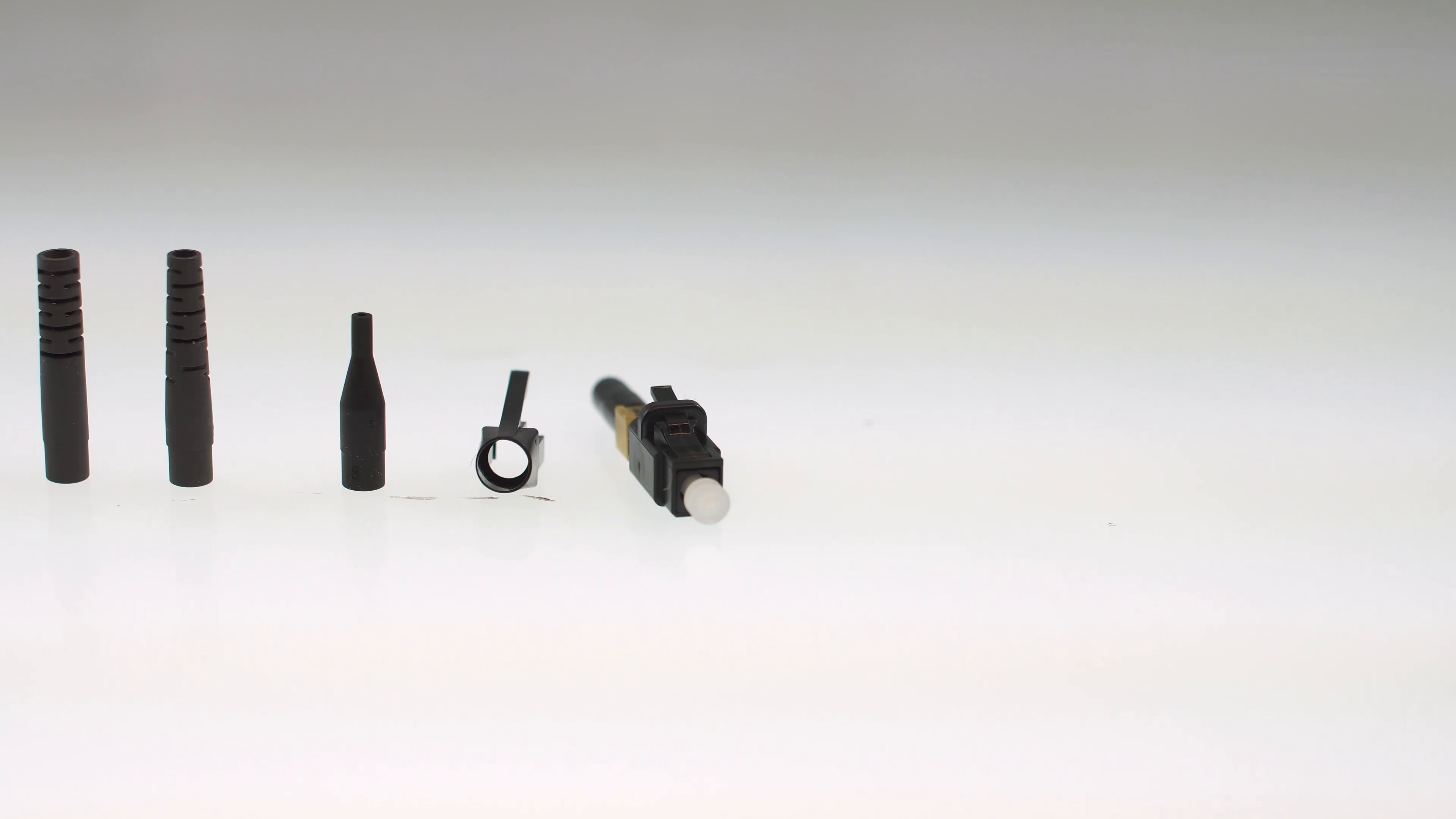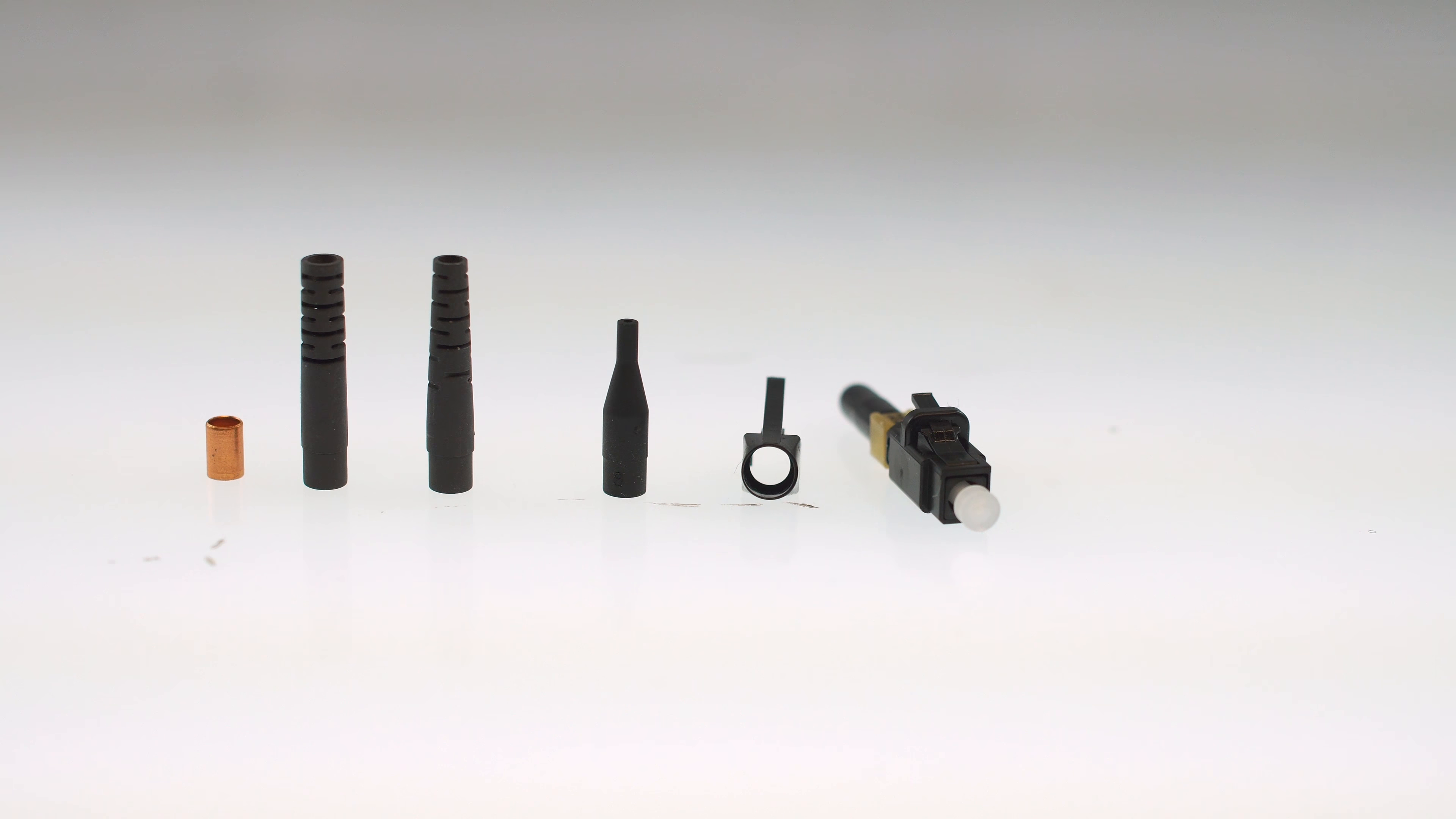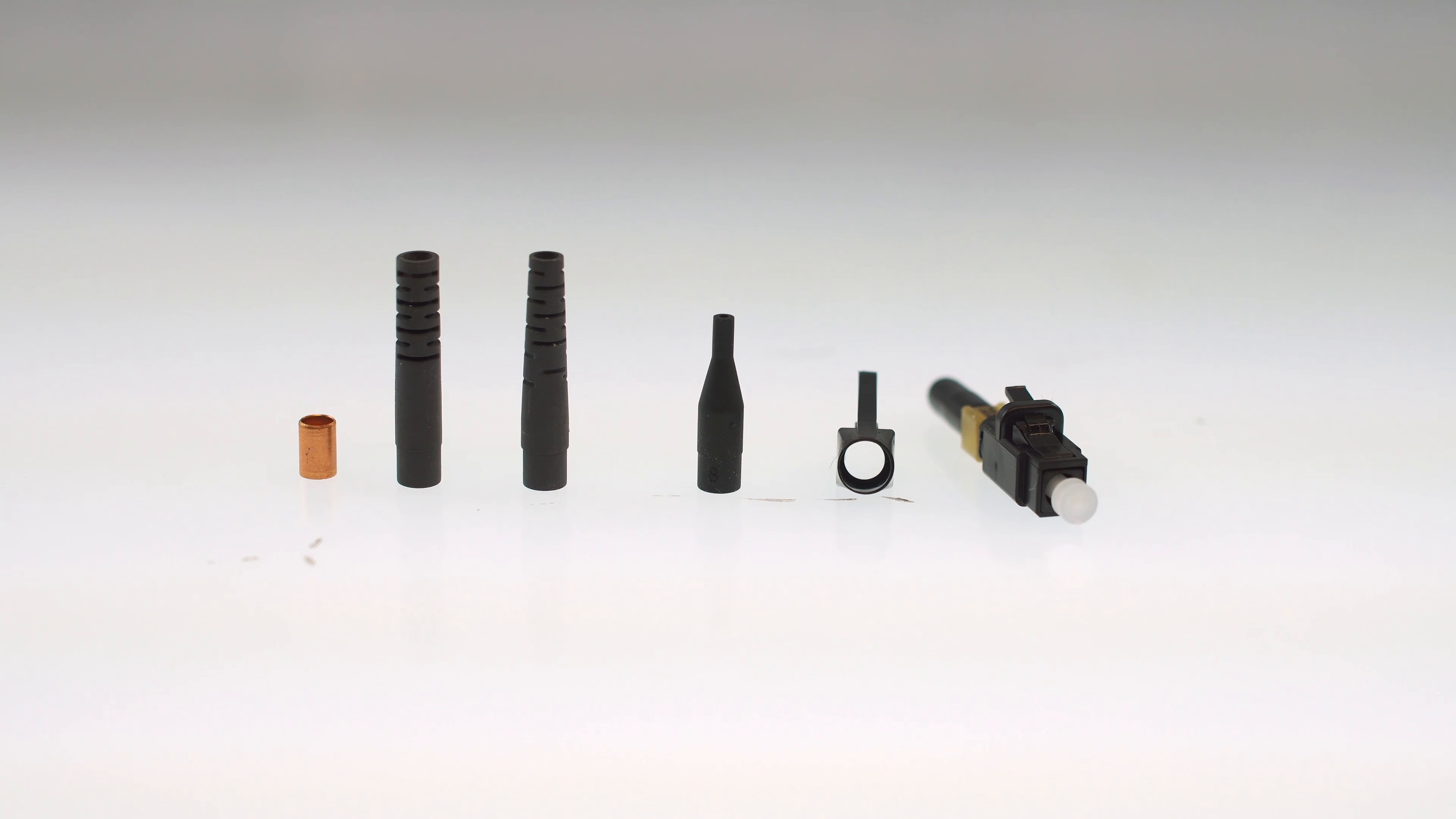Each connector comes with a connector housing, snap-on clip, copper ring, and strain relief boots for 900 micron, 2.0, 1.6, and 2.9 millimeter fiber.